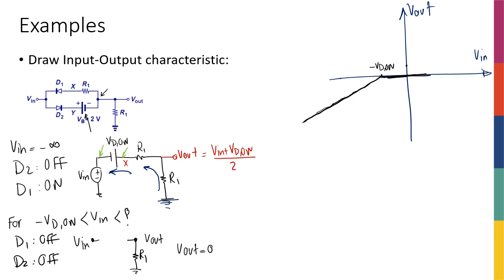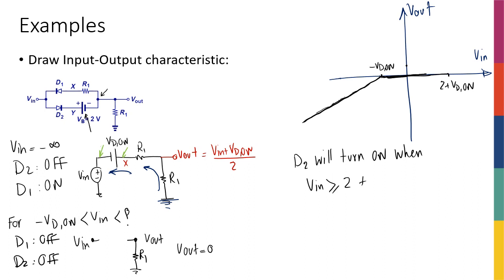When V_out is zero and the battery is two volts, D2 will turn on when V_in becomes greater than or equal to two plus V_D_on of D2, where the two volts comes from V_B.